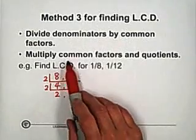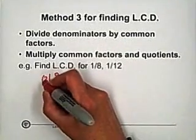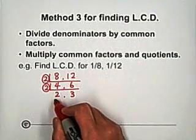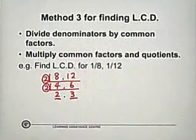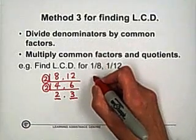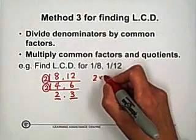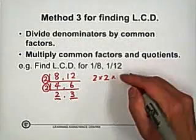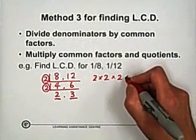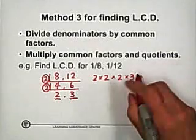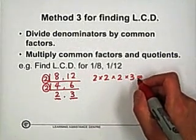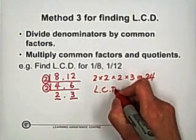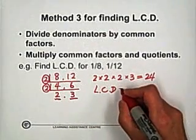Second step: multiply common factors and quotients. The common factors for 8 and 12 are the two 2s we divided by. The quotients are 2 and 3. So multiply the common factors and quotients: 2 times 2 times 2 times 3, which equals 24. The LCD, or least common denominator, for 1/8 and 1/12 equals 24.